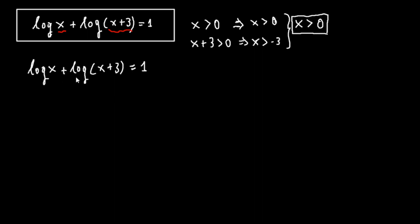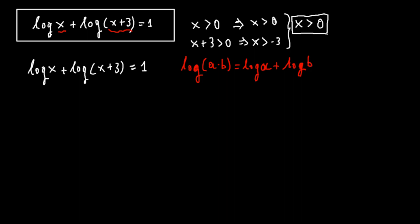Here we must observe that we have log x plus log(x plus 3), and if we recall a property of logarithms, we can write this as log of x times (x plus 3) equals 1.